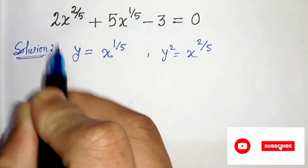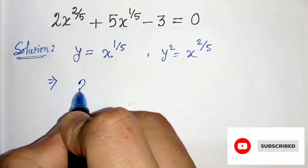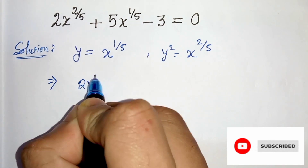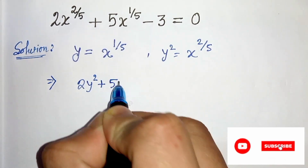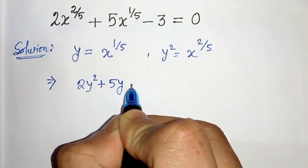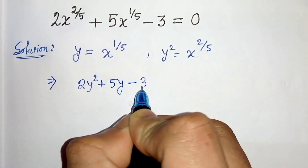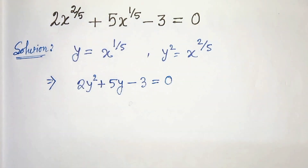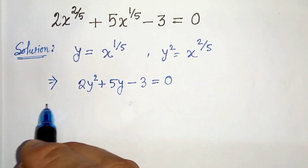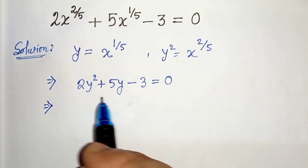So it will be 2y squared plus 5y minus 3 equals to 0. This is a quadratic equation. Now we will factorize this.